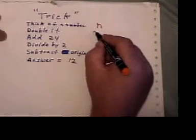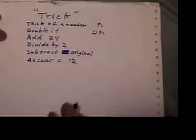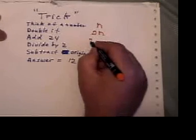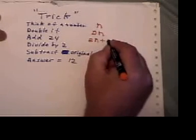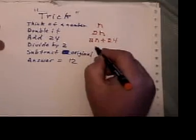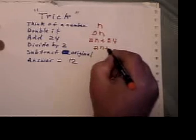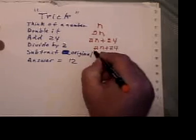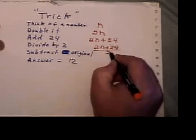If you doubled it, that would be 2n. If you add 24, that would be 2n plus 24. And if you divide that answer by 2, you get 2n plus 24, all divided by 2.